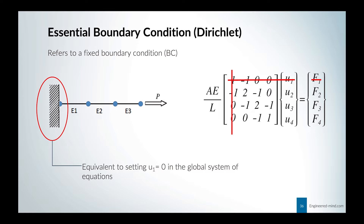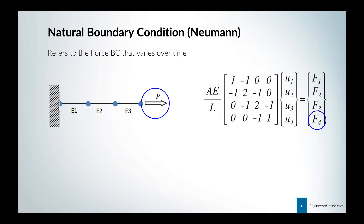We have a natural boundary condition, also called the Neumann boundary condition. This is basically the force — we know the force, which in our case is F4. At the fourth node, we have a force applied called P. We also have the Dirichlet boundary condition, specifying that U1 equals zero since the rod is fixed at the wall.